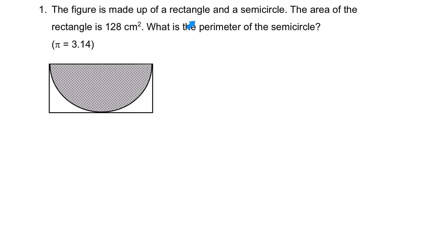The figure is made up of a rectangle and a semicircle. The area of the rectangle is 128 square centimeters. What is the perimeter of the semicircle? Looking at this figure, some of you might be wondering if the rectangle is 128 square centimeters, do I need to guess and check to find the length and the breadth? Actually, there is a much better way to figure out the dimensions. If this entire area is 128, what about half of it?